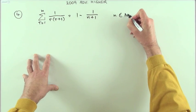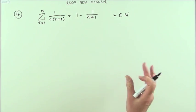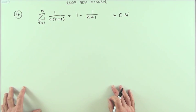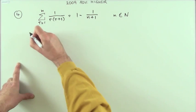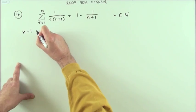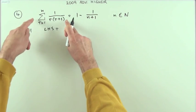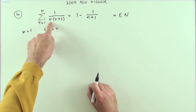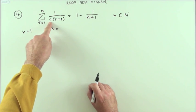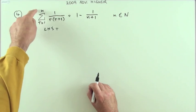Prove it's true at the start, when n is one. That's the least value of it. If n is one, what have we got? Well, the left-hand side is this part.